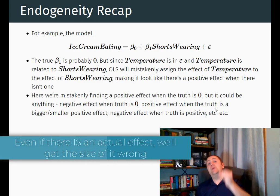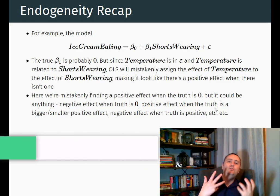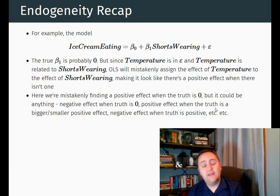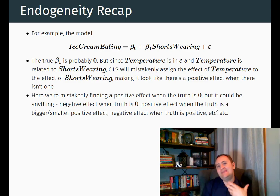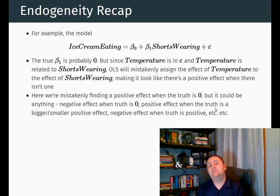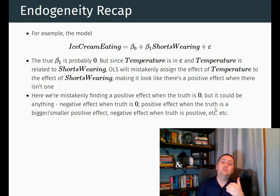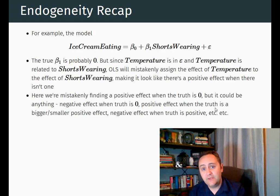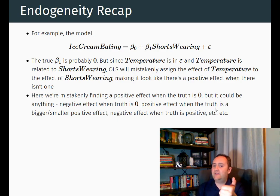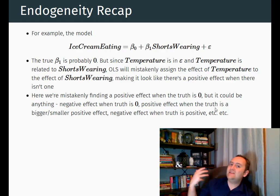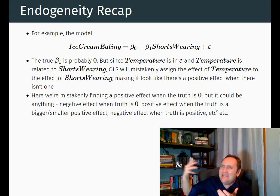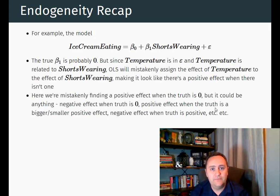How can we make OLS tell the difference? Well, we can make it tell the difference by bringing temperature in and including it as a control variable. If we take it out of the error term and put it in the model, suddenly OLS is able to tell the difference between the effect of shorts wearing and the effect of temperature, even though those two things are related to each other. So that's the point of controls — there's something in the error term that is related to our variable of interest. If we leave it in the error term, it's going to give us an identification issue because OLS is going to assign the effect of those variables to our treatment variable by mistake. But by bringing it into the model, we can get rid of that additional effect.